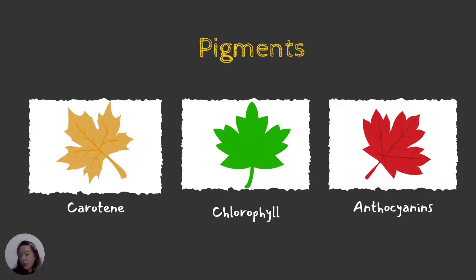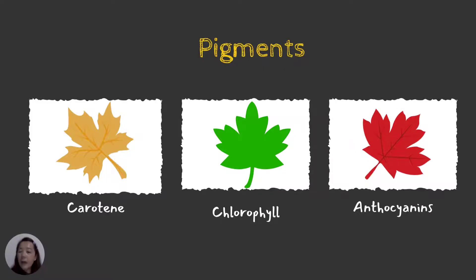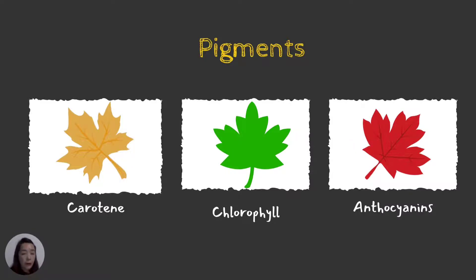There are not only green pigments, but also yellow, orange, and red colors that appear on the leaves of plants. For example, maple leaves during autumn season turn yellow or even red as the leaves are decaying — the color green turns to yellow, orange, and red. The yellow and orange pigments are called carotene.